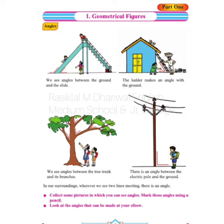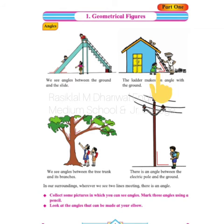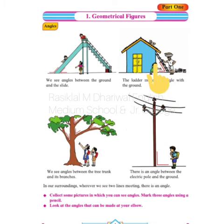Let's move on to the next picture, that is the house. In the second picture, the ladder makes an angle with the ground. Can you see it? It is between the ladder and the ground. So the ladder makes an angle with the ground — it is marked in red.